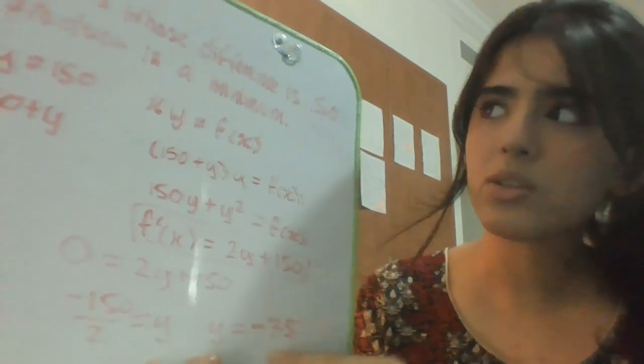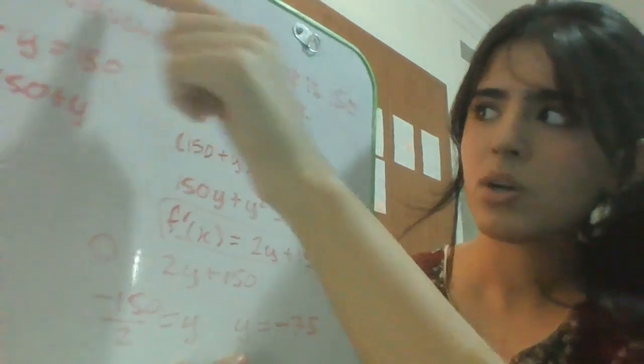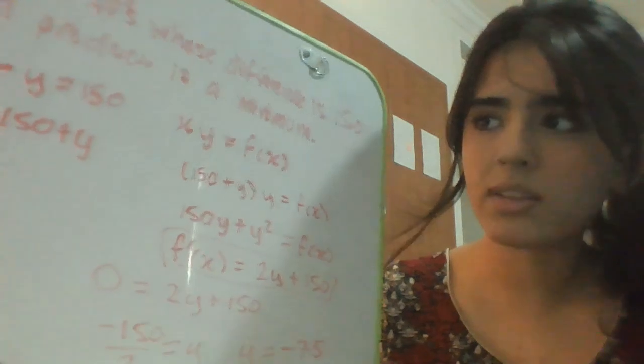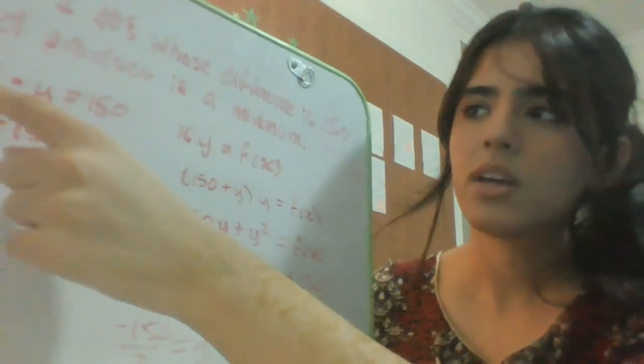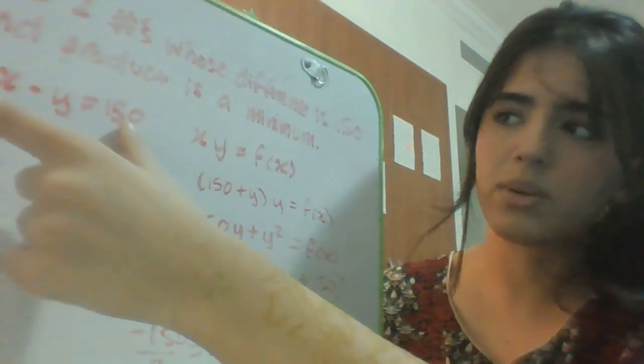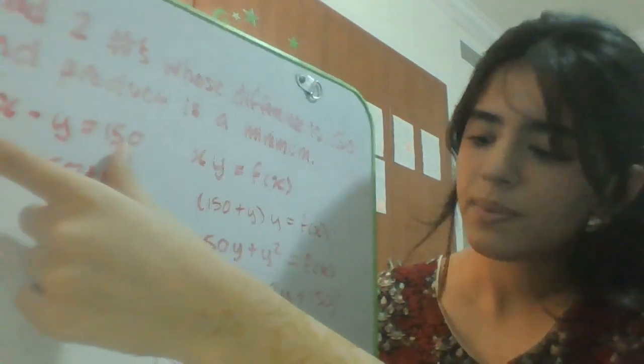Okay, so you have one of the numbers whose difference is 150. Okay, you have one of them. Now you need to find the second number, which is x. And you can do that by plugging 75 into this equation. Okay, I'll write it out.